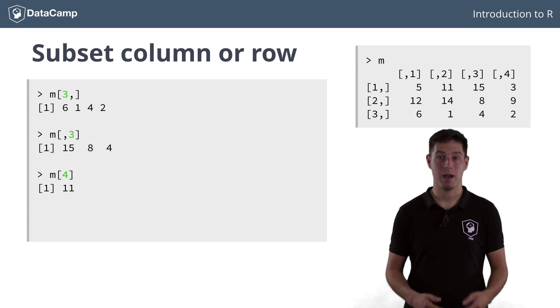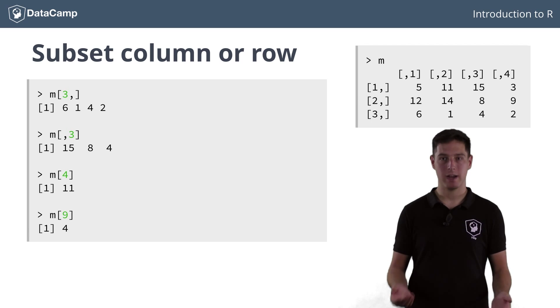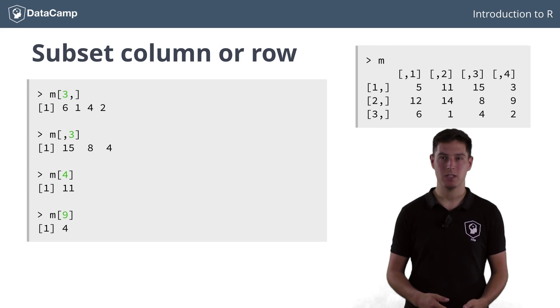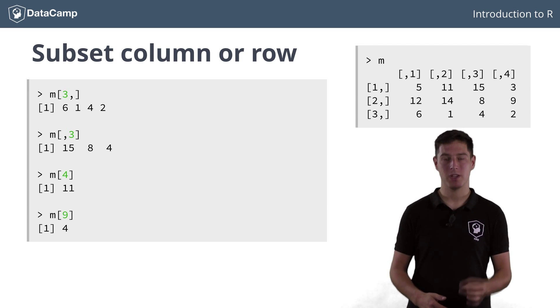This means that if we pass m[9], you should get 4, in the third row in the third column. Correct! There aren't a lot of cases in which using a single index without commas is useful, but I just wanted to point out that the comma is really crucial here.